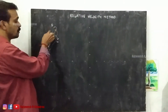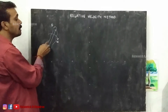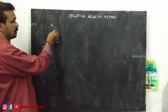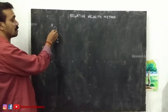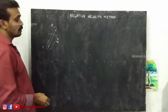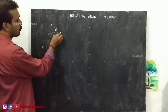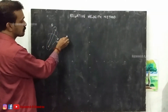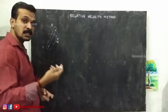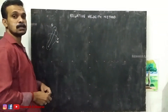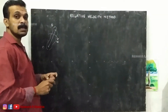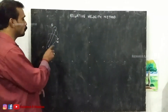The velocity of B with respect to A will be perpendicular to the line connecting B and A. That will be perpendicular to this line. We can draw the perpendicular either in this direction or in this direction. The velocity will be in the sense of omega.